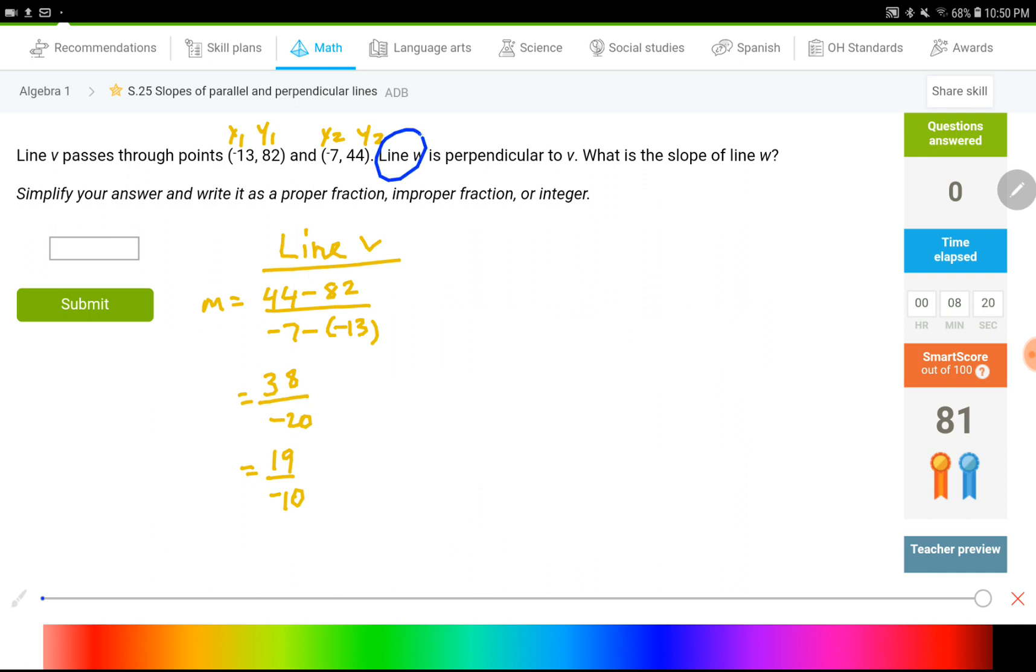Now there's another line, line W. All we know about this line W is that it is perpendicular to V. So if these two are perpendicular, what I need to do to find the slope of this one is flip the other one and change the sign from negative to positive. So this would be my final answer for this question.